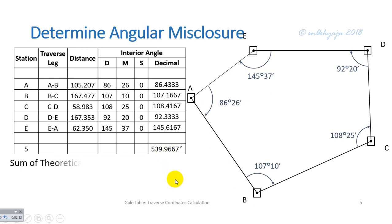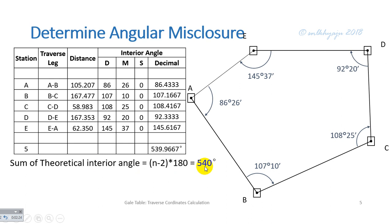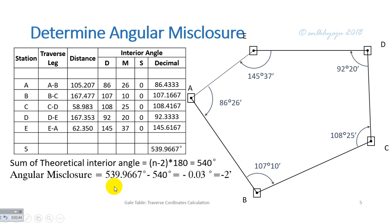The sum of the theoretical interior angles equals (n − 2) × 180°, which is 540° for this five-sided traverse. However, we observed the total calculated angle as 539.9667°. Therefore, the angular misclosure equals observed angle minus theoretical angle, which is −0.03°, that is, minus 2 minutes.